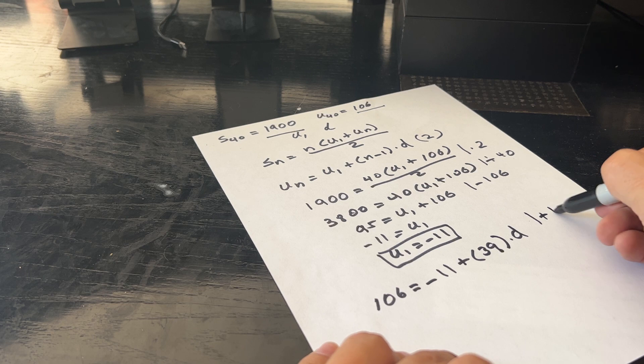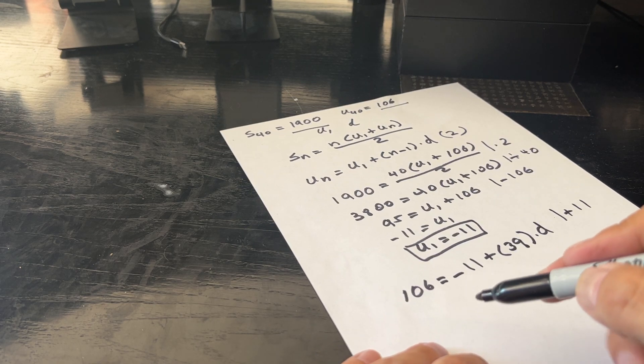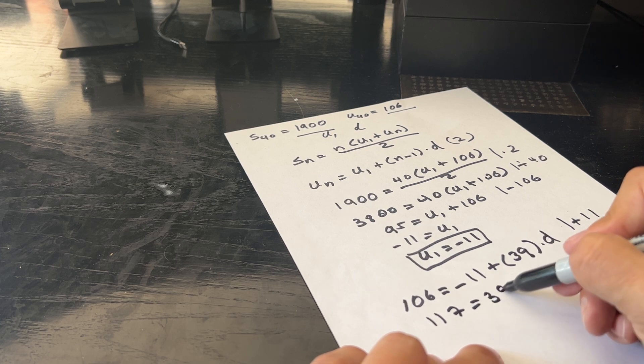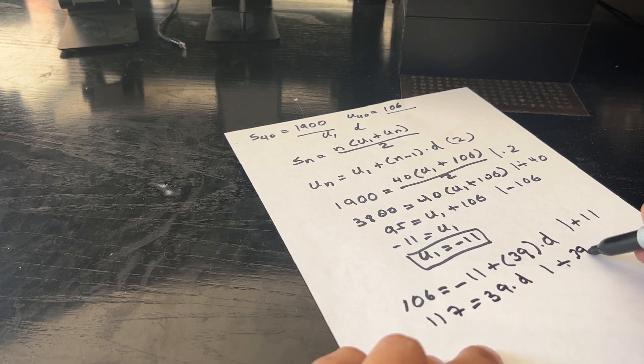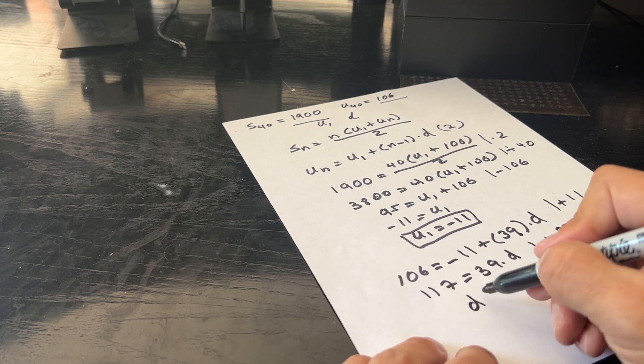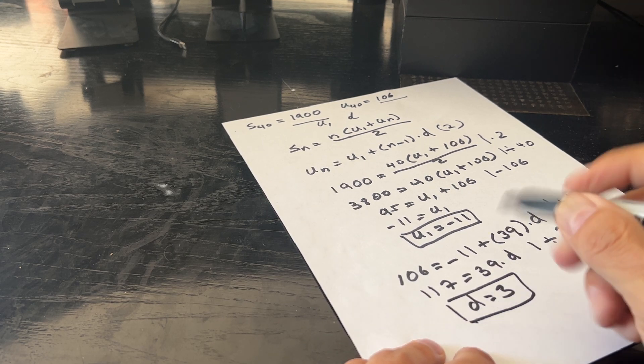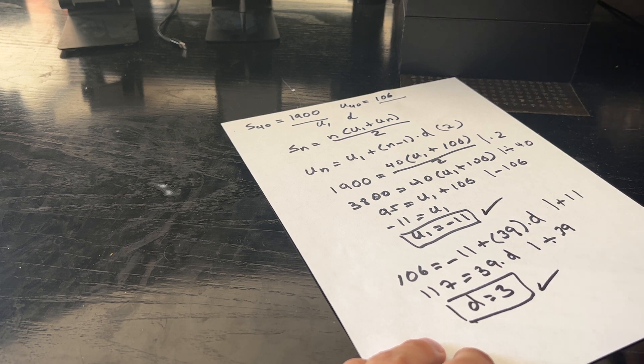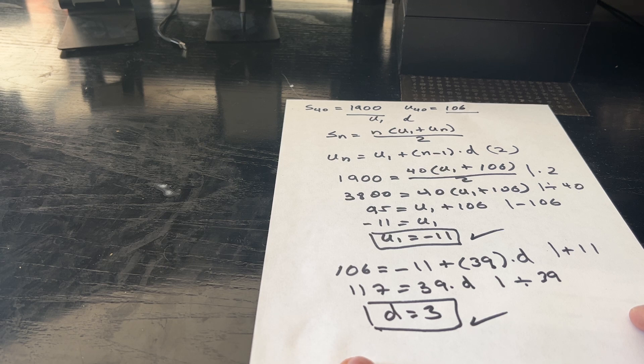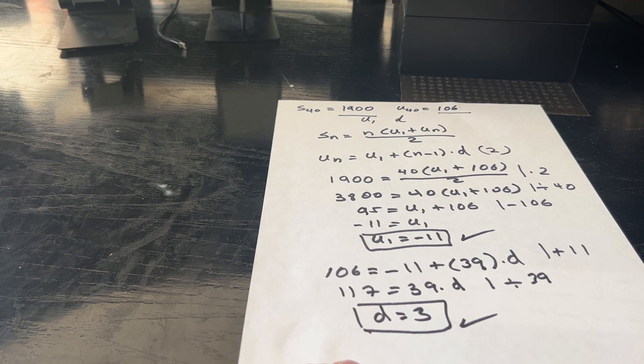So now we add plus 11 on both sides, and this gives us 117 equals 39 times D. We divide by 39 on both sides of the equation, and this gives us that D equals 3. And these are the two values we're looking for, and so this is a very simple plug values into the equation and solve for the unknown.